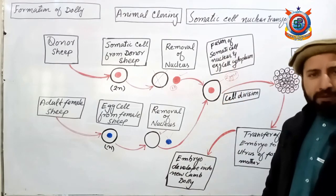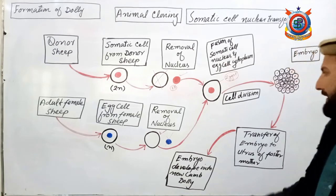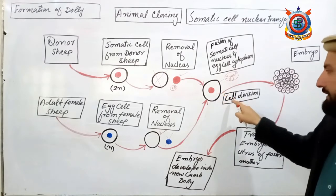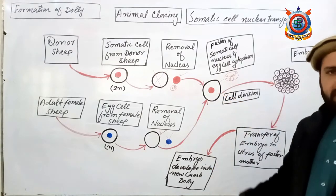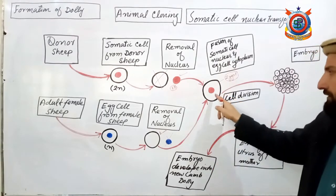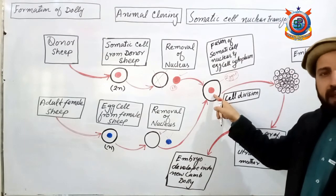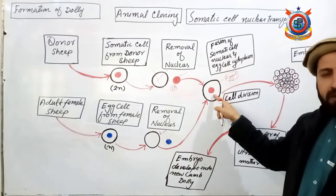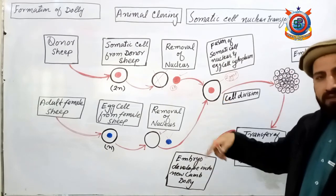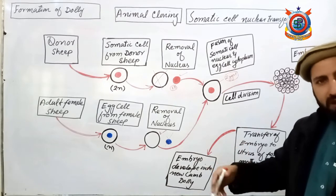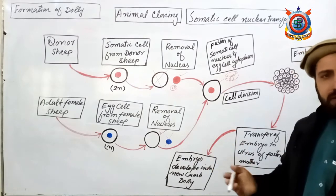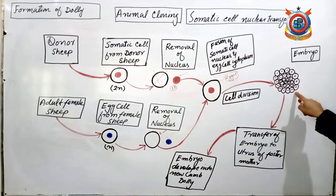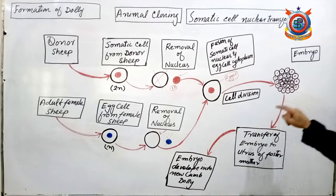Jab zygote hamare paas ban jata hai to is zygote mein cell division initiate kiya jata hai. Ye zygote jab cell division shuru kar leta hai to is tarah: ek cell se do cell bante hain, do se chaar, chaar se aath, aath se solah, solah se batees — and so on. Ye division chalta rehta hai aur ek ball of cells ban jata hai.